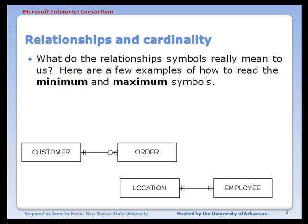A relationship has cardinality, which are the minimum and maximum constraints on the relationship. Here are a couple of examples of how to read the minimum and maximum symbols.